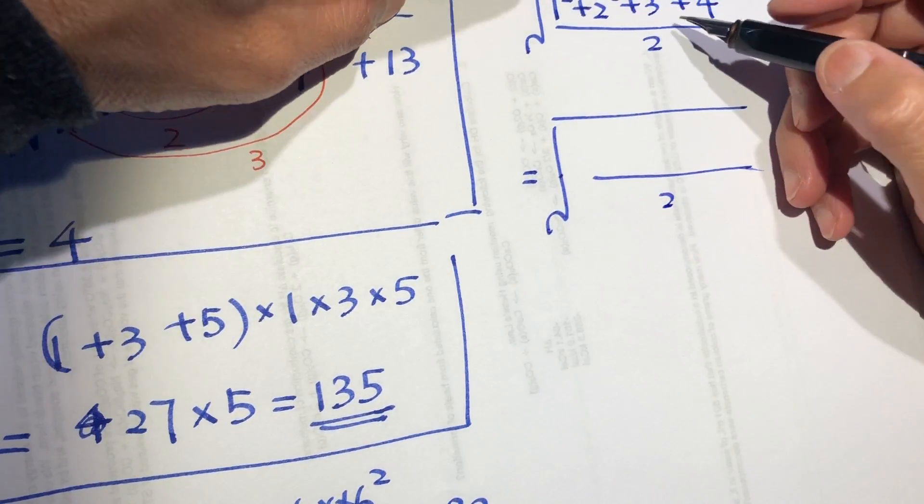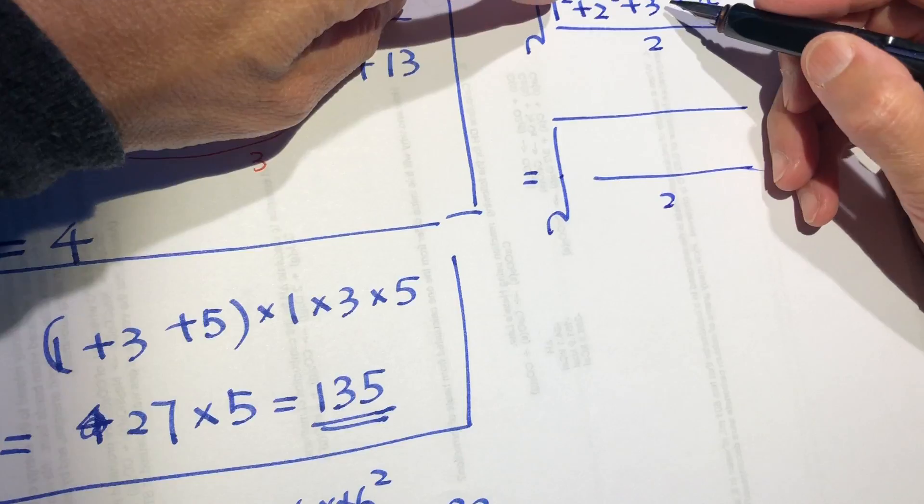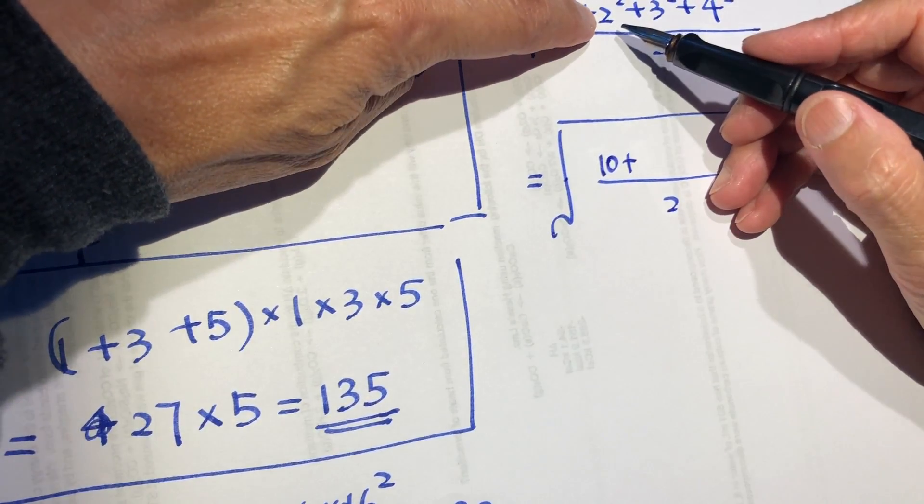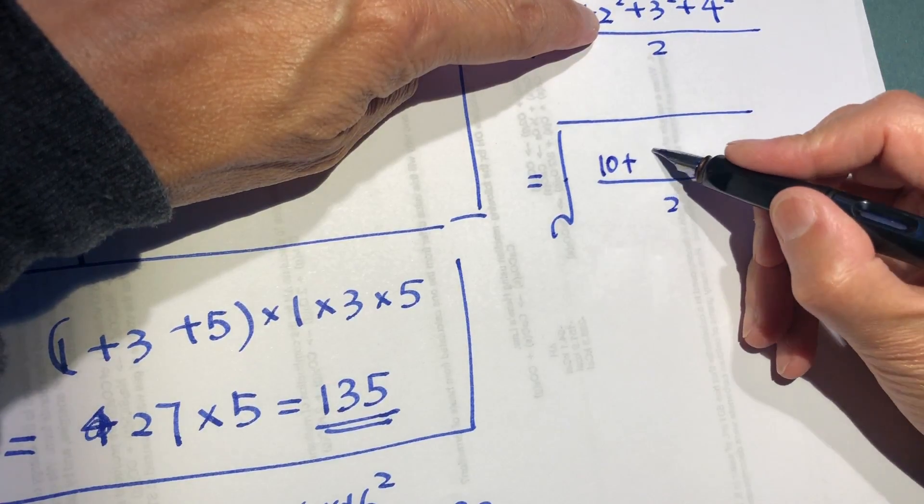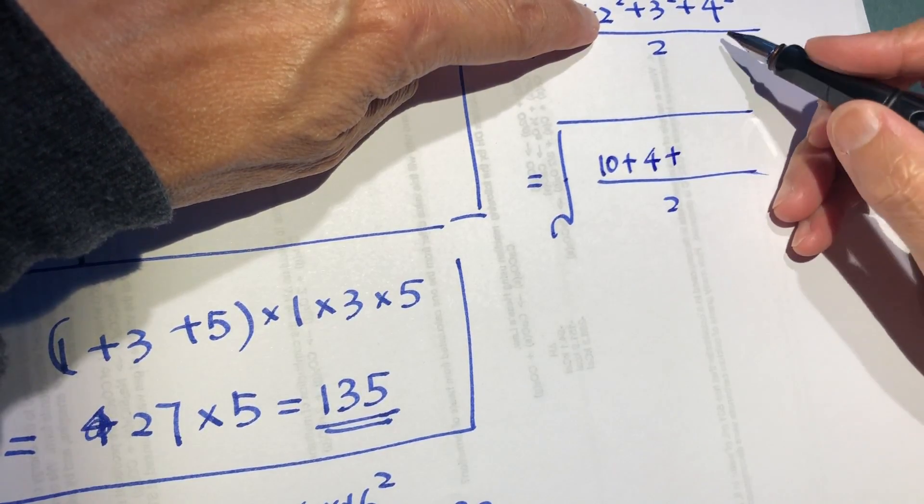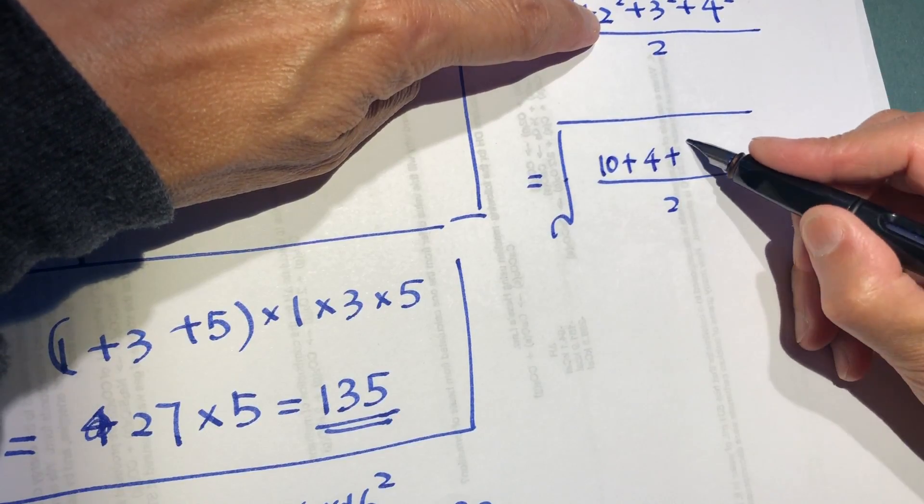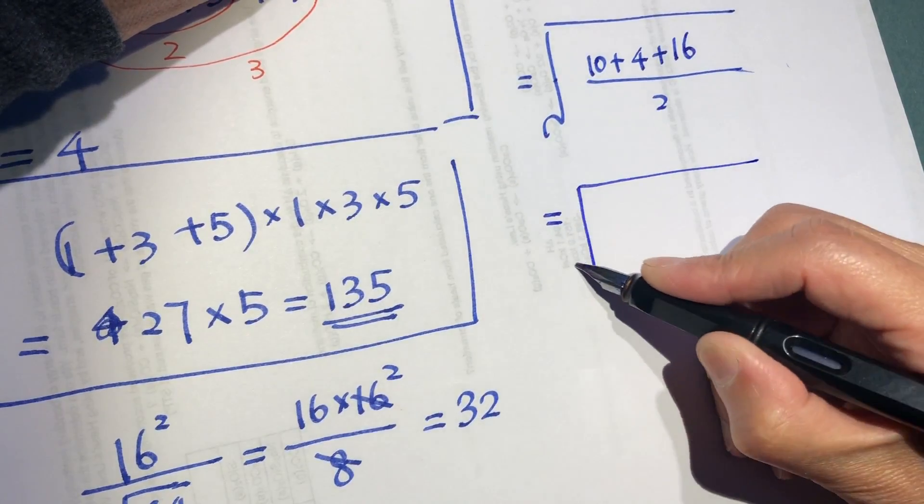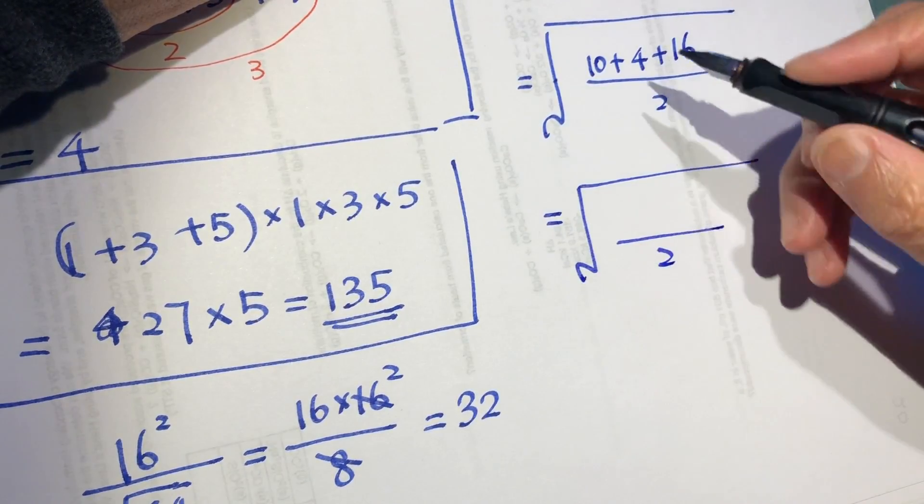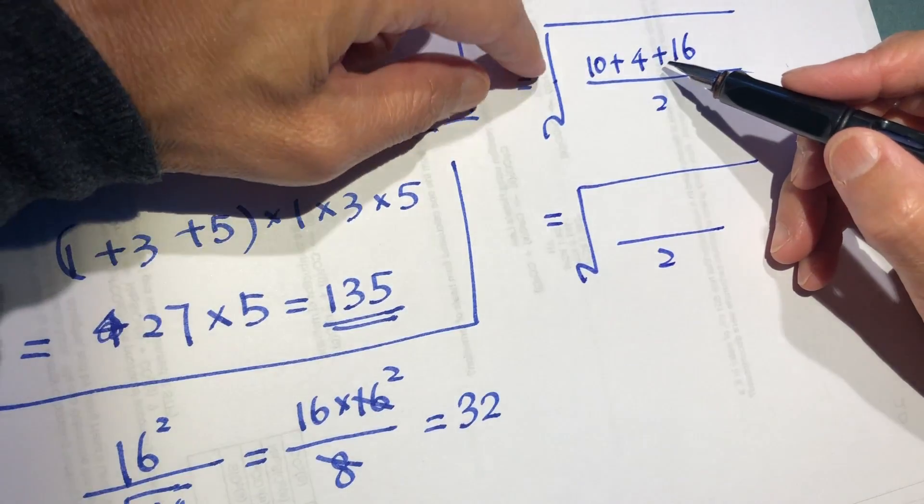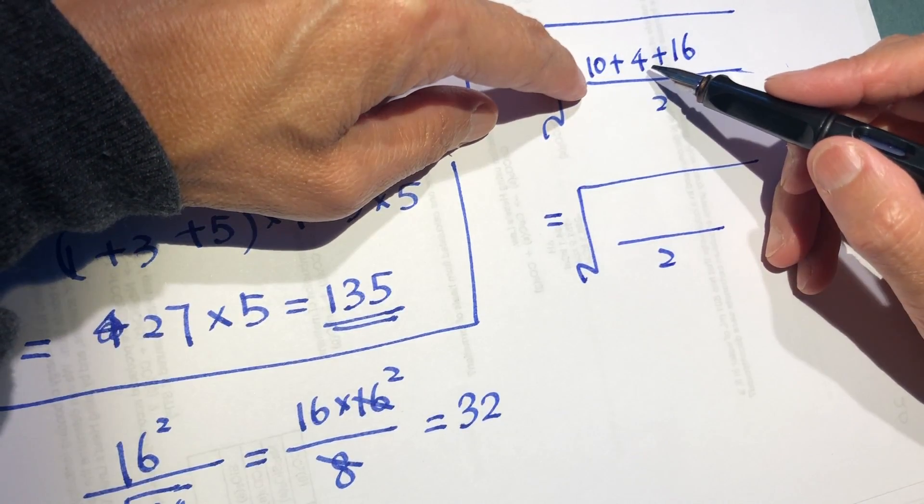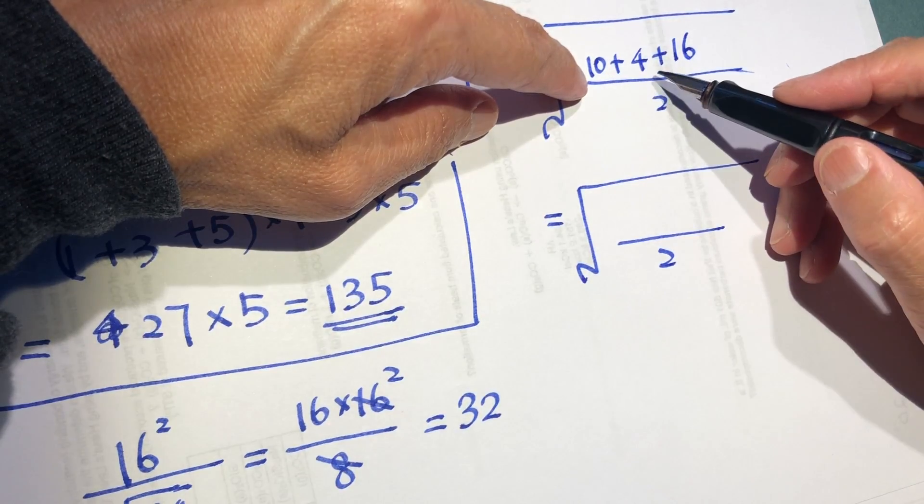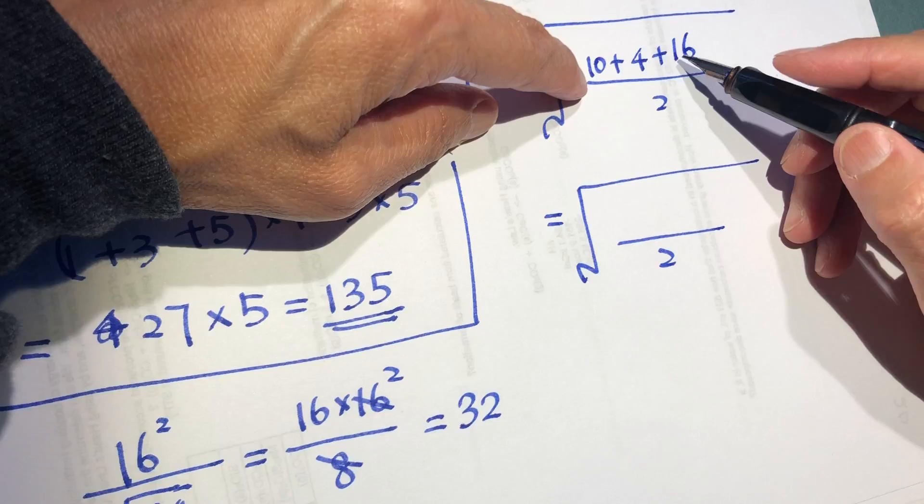1 plus 9 is 10, plus this is 4, and 46 plus 4 plus 16 equal to 10 plus... 10 plus 20 is 30.